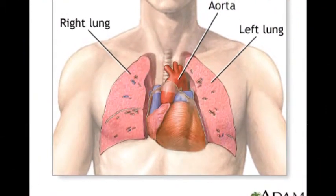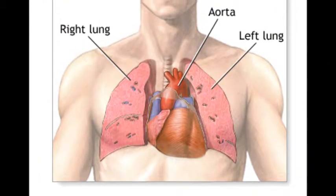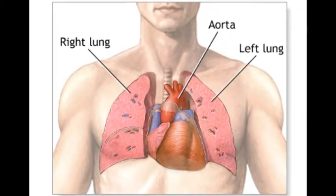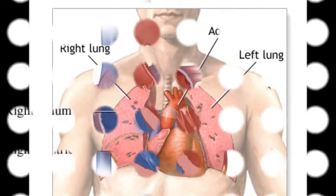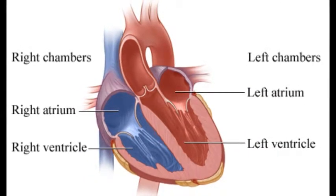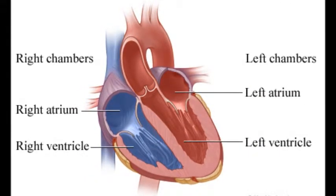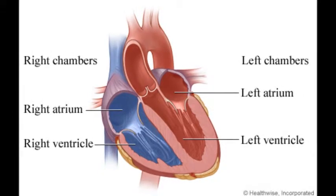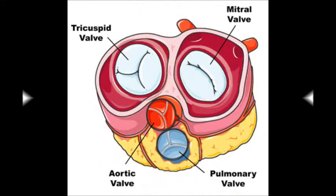Nestled within the thorax with each lung beside it, the fist-sized cardiac organ has four chambers. The atria are the two chambers at the top and the ventricles are the two lower chambers. Separating each of these chambers is the septum, essentially walls of tissue. Heart valves assist the movement of blood through the chambers of the heart in a one-way action.